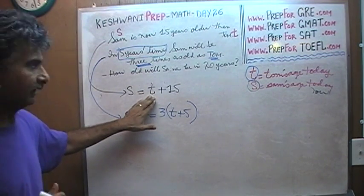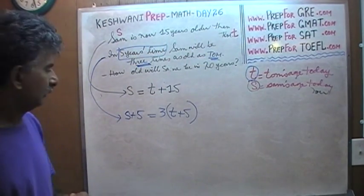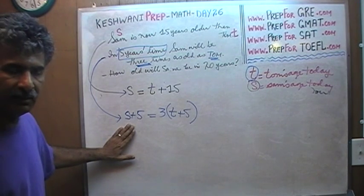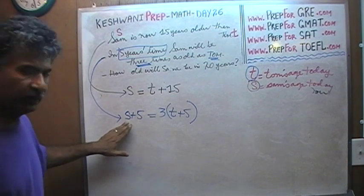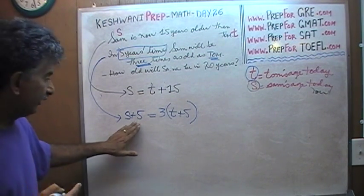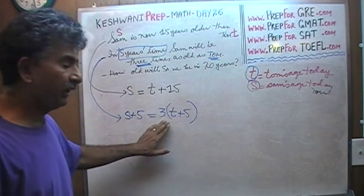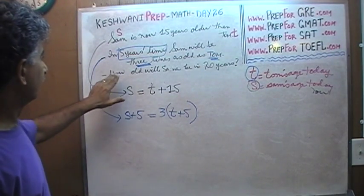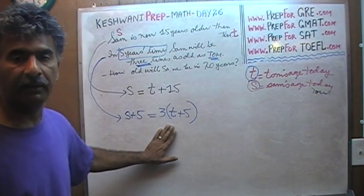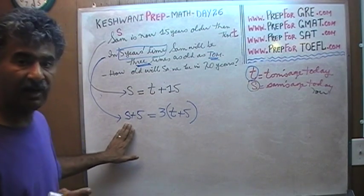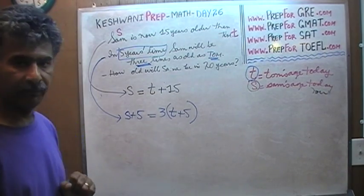So what we are told is: Sam's age today is 15 years more than Tom's age — S = T + 15. And five years from now, Sam's age S + 5 is going to be three times Tom's age five years from now, 3(T + 5). Sam's age five years from now is going to be three times the age of Tom five years from now. That's all we have to do — solve for the variables.